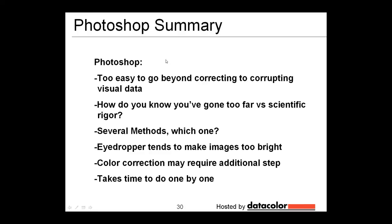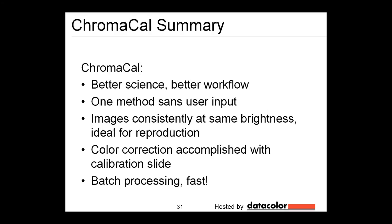So in summary, if you're using Photoshop, it's really too easy to go beyond correcting your visual data to corrupting. And this system was really made to address issues specifically with color bright field imaging and not like Photoshop, which tries to hit a broad swath. You also have to wonder how you know you've gone too far, especially when you're using the eyedropper tool. It's a little difficult to know and it's subjective. There are several methods, which one would you use? The eyedropper, again, tends to make the images too bright. Color correction is going to be yet another step that you have to take and obviously it takes a lot of time to do this one by one.